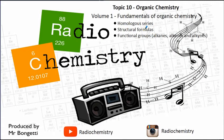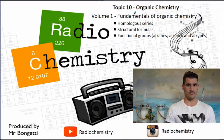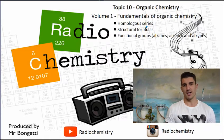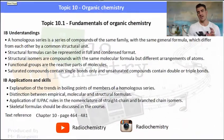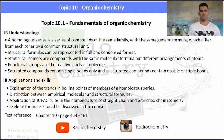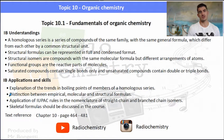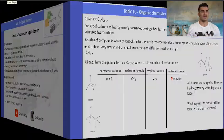Welcome to another video. In this series we're on topic 10 — organic chemistry. Topic 10 volume 1 covers the fundamentals of organic chemistry: we'll talk about the homologous series, look at some structural formulas, and have a quick chat about some simple functional groups. The IB understandings and applications are quite long for this topic and really important for the next couple of topics as well, so make sure you have a good understanding of the basic understandings and skills we'll go through in this video.